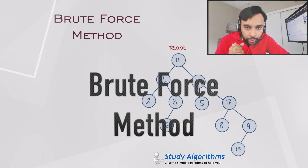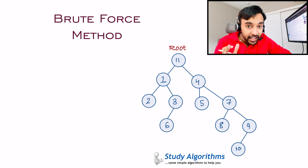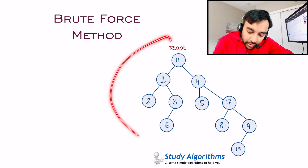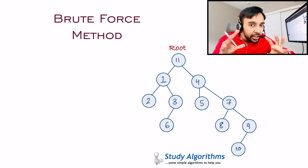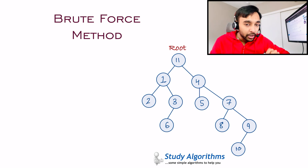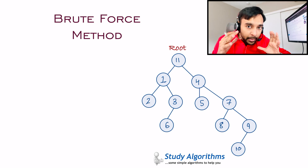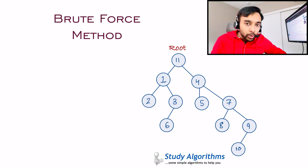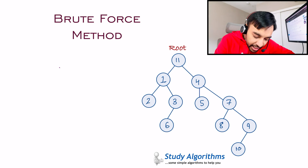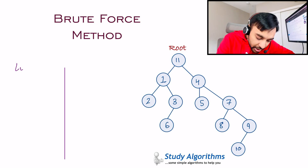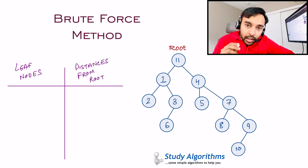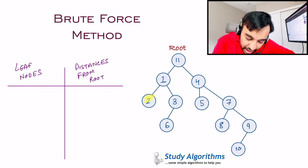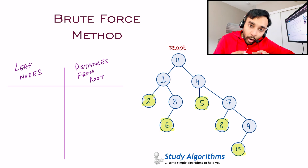A good developer always strives to come up with a brute force solution first, because a brute force solution can guarantee that a solution to a problem exists. So let us say you are given this binary tree and asked to find its height. The first thing that comes to mind, given the definition of height, is that you can find out all the distances between the root and the leaf nodes. You can create a table where on the left side you store all of your leaf nodes, and on the right you write down all the distances from the root. The leaf nodes are 2, 6, 5, 8, and 10.